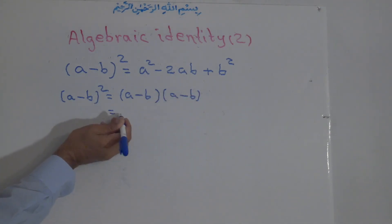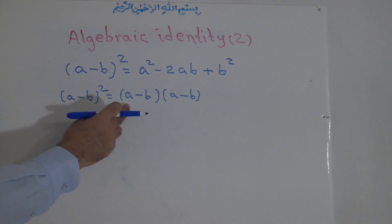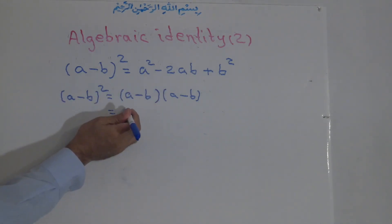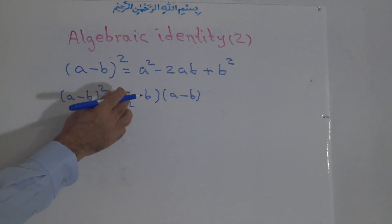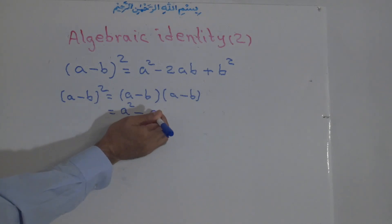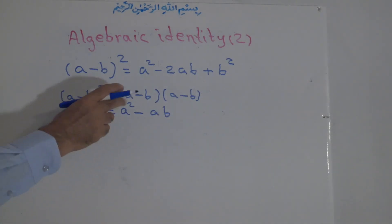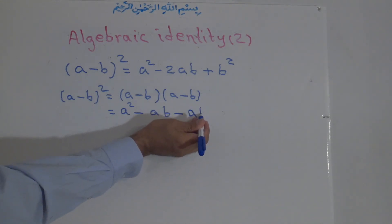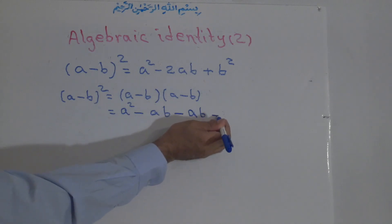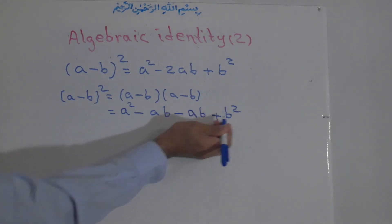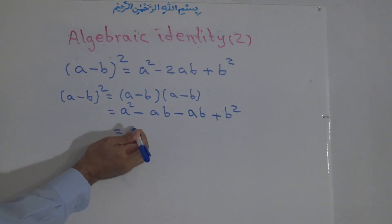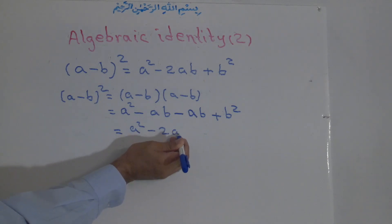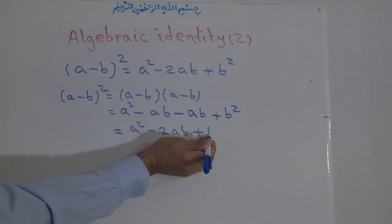Now what we do is multiply these two binomials with each other. The first term times the first: positive times positive, a times a is equal to a to the power of two. Then positive times negative is negative, a times b is ab. With the second term, negative times positive is negative, and b times b is b to the power of two. Simplifying: a squared, negative ab and negative ab equals negative 2ab.